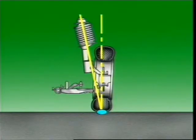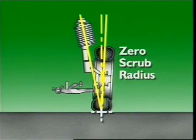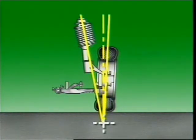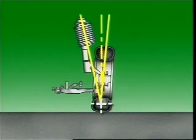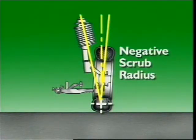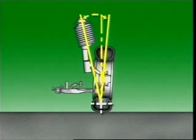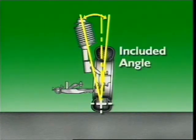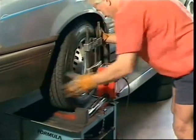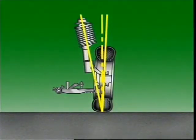Steering axis inclination brings the pivot point close to the centre of the tyre contact patch at the road surface. It intersects with the camber line through the tyre and wheel. If these two lines intersect at the centre of the tyre at road surface, the vehicle has zero offset or zero scrub radius; below the road surface gives positive offset; above gives negative offset. The angle between steering axis inclination and the camber line is called the included angle — it is a diagnostic angle. Since steering axis inclination is not adjustable, if camber is correct the inclination should also match specification.